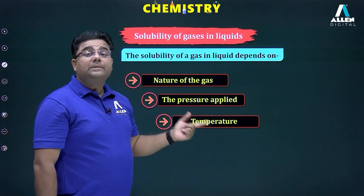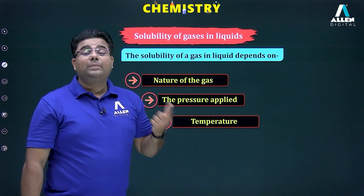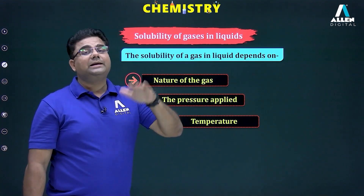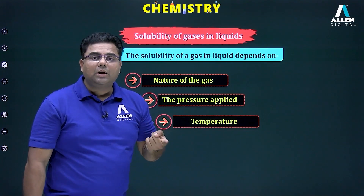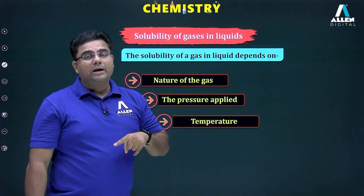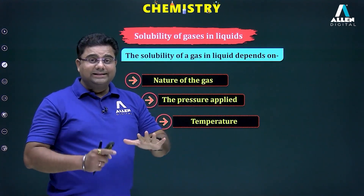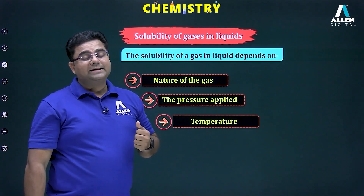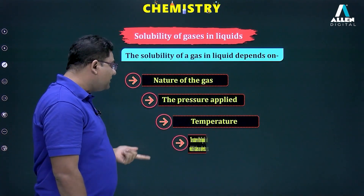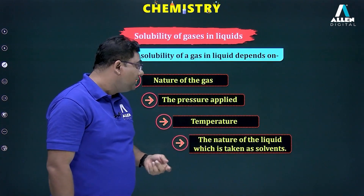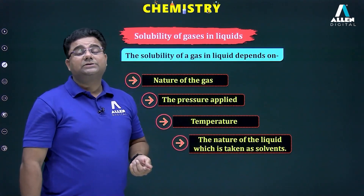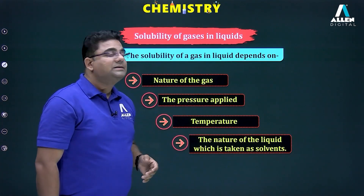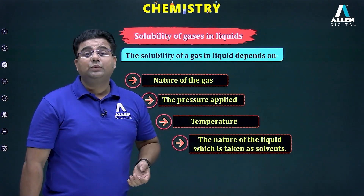The third factor is temperature: increasing temperature decreases the solubility of gas in liquid. The fourth factor is the nature of the liquid taken as the solvent. These factors continuously affect the solubility of gases in liquid and must be remembered.